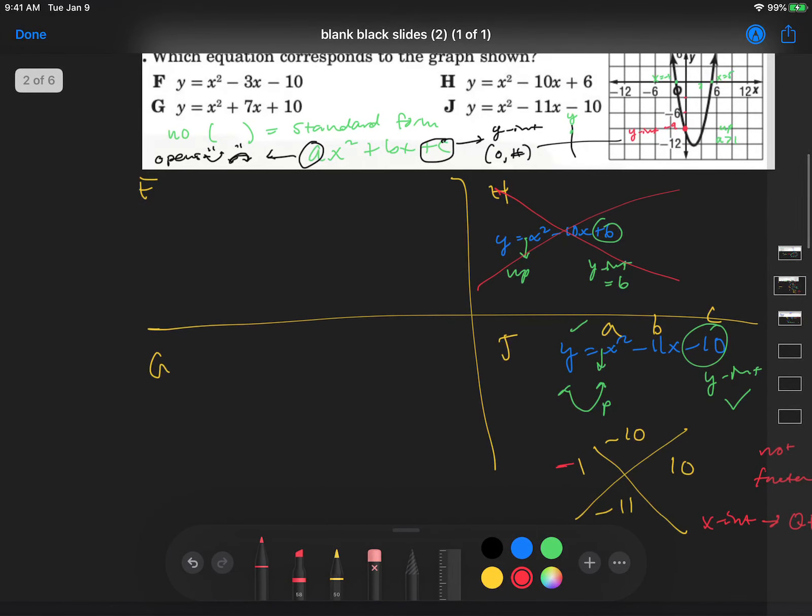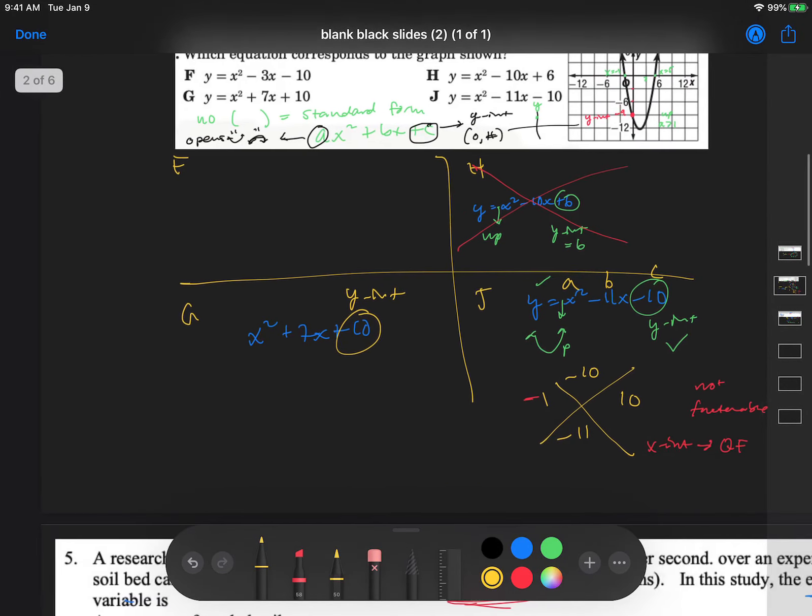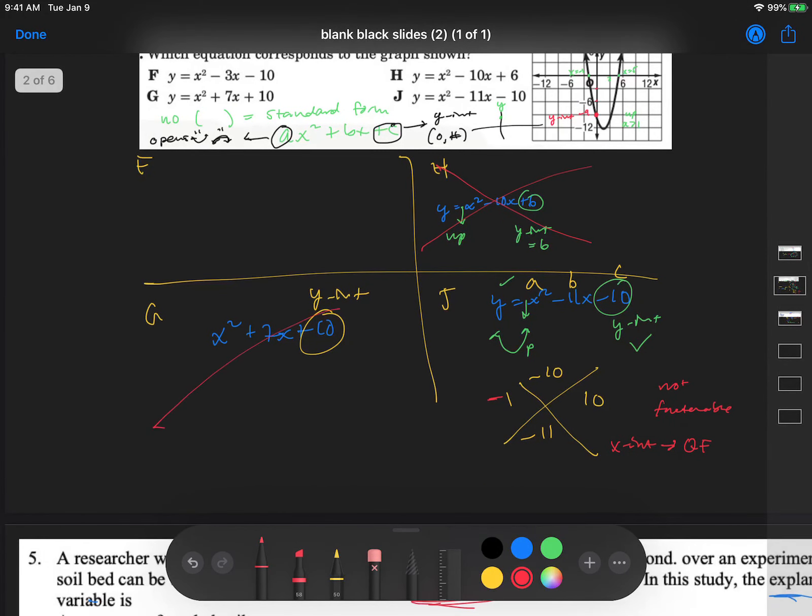Let's try this one over here. Let's try G. x squared plus 7x plus 10. So this one has a y-intercept of positive 10. And remember, we're trying to look for a negative 9. So that one we can eliminate. And let's look at F.